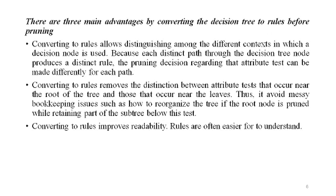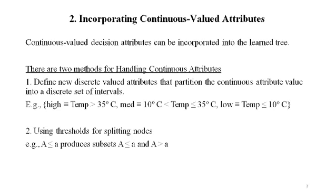This is an important approach with respect to issues in decision tree learning. The next topic is incorporating continuous valued attributes. The initial definition of ID3 is restricted to attributes that take on a discrete set of values. The target attribute must be discrete valued, and the attributes tested in decision nodes must also be discrete valued. However, this second restriction can be removed so that continuous valued decision attributes can be incorporated into the learned tree, by dynamically defining new discrete valued attributes that partition the continuous attribute values into a discrete set of intervals.